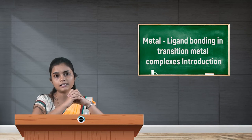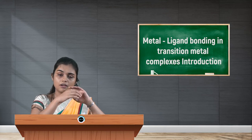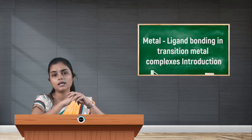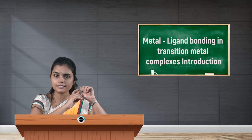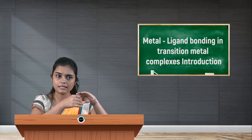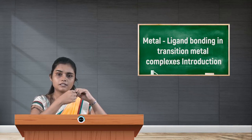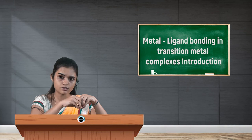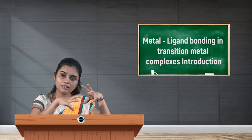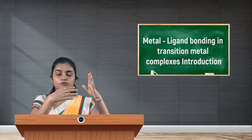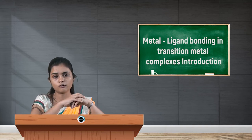In order to explain the metal-ligand bonding in transition metal complexes, three important theories were developed. The first one is the Valence Bond Theory, the second is Crystal Field Theory, and the third is Molecular Orbital Theory. Valence Bond Theory failed to explain some important characteristic properties of transition elements, where it was further improved by Crystal Field Theory. Crystal Field Theory then failed to address some important aspects, which were successfully explained by Molecular Orbital Theory.